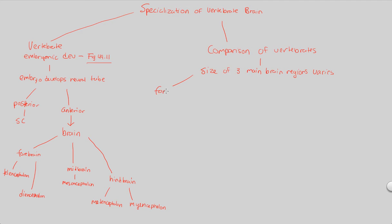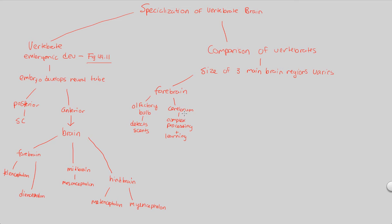The forebrain contains the olfactory bulb, which is the part of the brain that detects scent. This may be more or less important depending on the organism. The forebrain also contains the cerebrum, which is in charge of complex processing and learning. These are very specialized and important processes of the central nervous system located within the cerebrum, which is part of the forebrain.